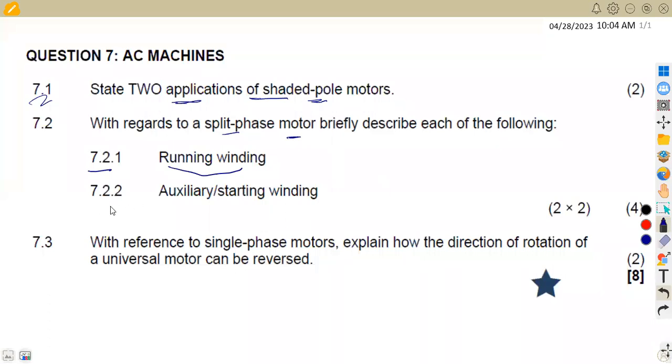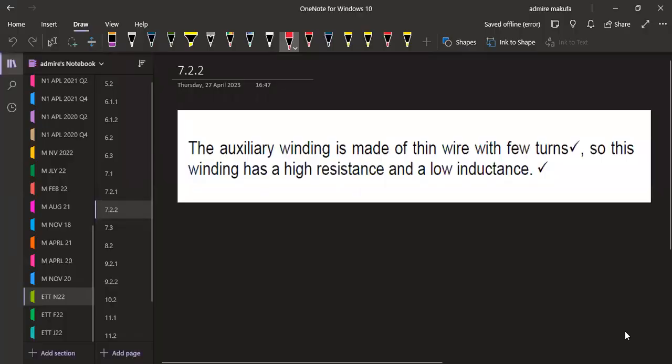Question 7.2.2 is about the auxiliary or starting winding. The auxiliary winding is made of thin wire with few turns, so the resistance of this winding is...